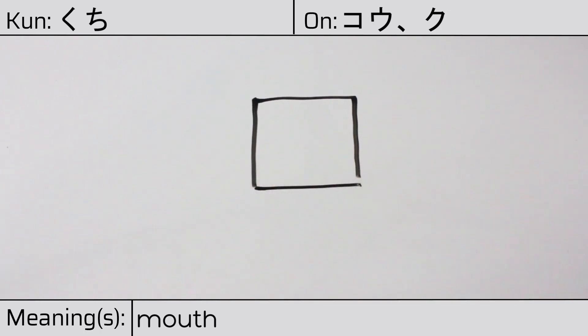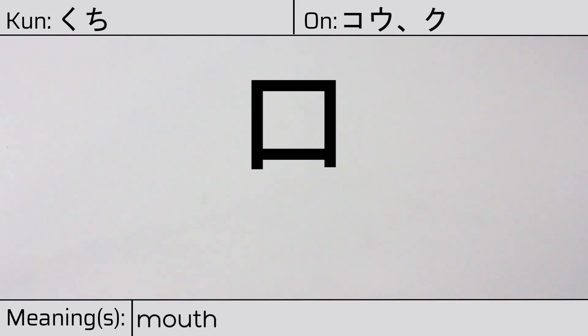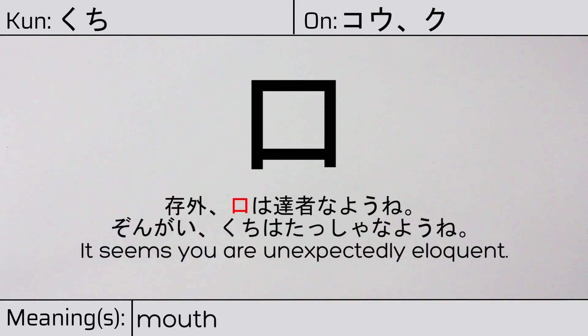Our example sentence is: 存外、口は達者なようね — It seems you're unexpectedly eloquent.